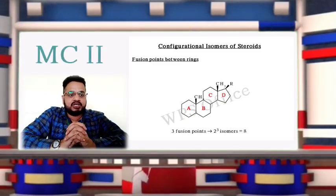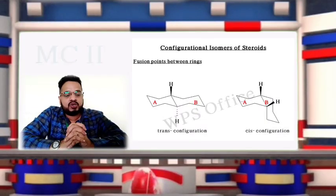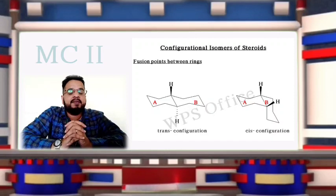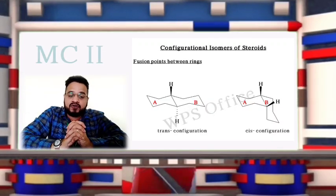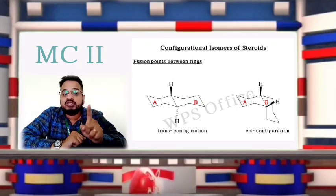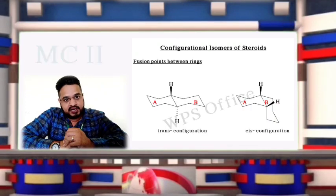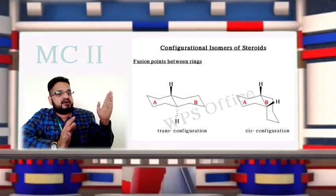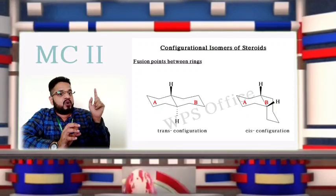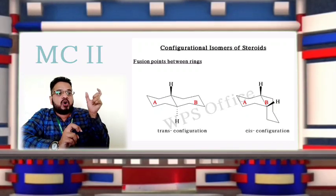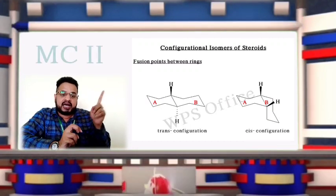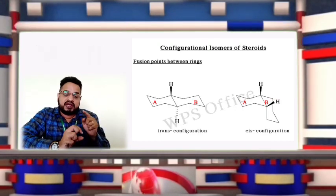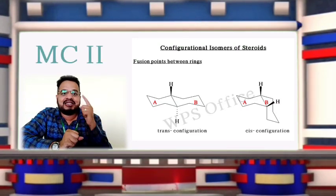While discussing the steroidal ring, the configurational isomers of steroid show that the A and B ring of the cyclohydroperhydrophenanthrene ring can be in a trans configuration or a cis configuration. We are focusing more on the A and B ring here. In the first figure, A and B are both in chair conformation and they are connected in a trans configuration.